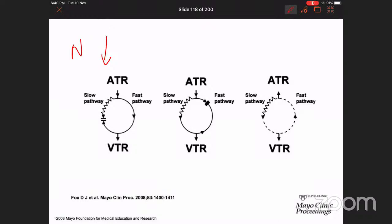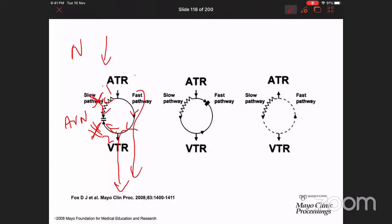This is around the AV node. The fast impulse comes down the fast pathway, the impulse also comes down the slow pathway but more slowly. When the impulse reaches junction two and goes downstream to activate the ventricles, the impulse going back up finds the slow pathway refractory because it is being activated from the impulse coming down. Therefore it is killed there and the slow pathway impulse is also killed when the two meet. Conduction exclusively occurs via the fast pathway.